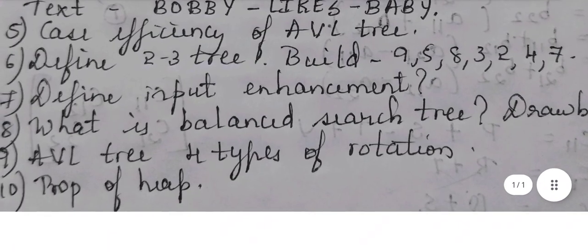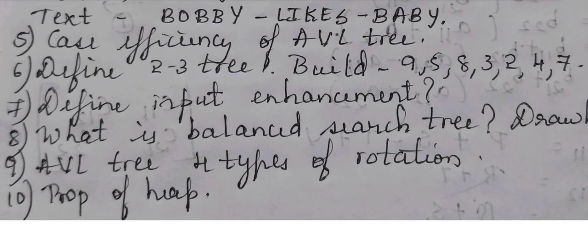The ninth question I've already given. The tenth one is properties of heap. There are just two properties: write those two properties - the shape property and parental property. Write these two properties and explain that in two-three lines.